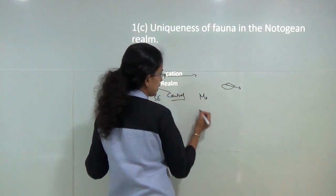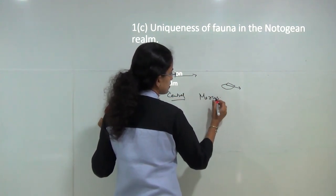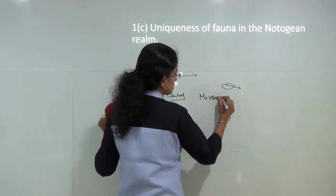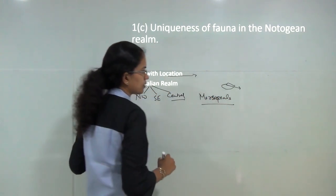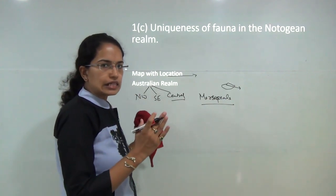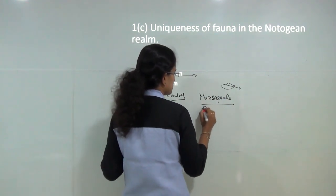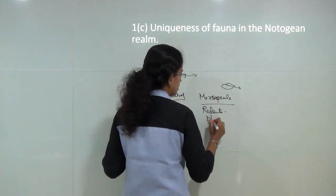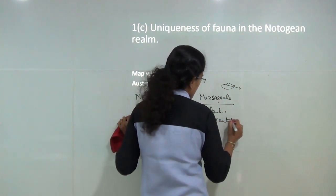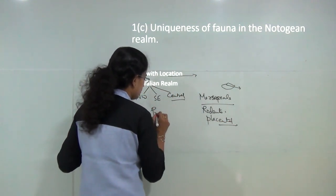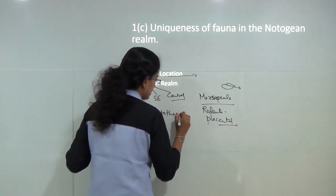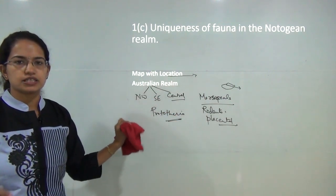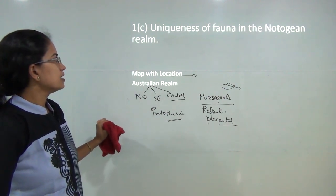You must explain the marsupials, which are the main animals found here — nearly 18 species are endemic to this region. Then you have the presence of rodents, placental animals, and prototherians that are mainly present in this region. These are the major fauna that exist here.